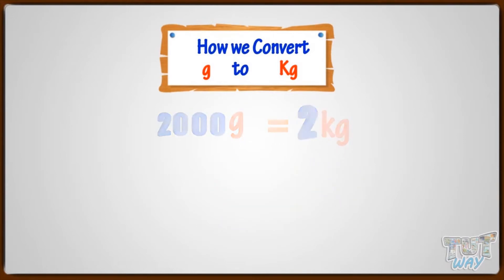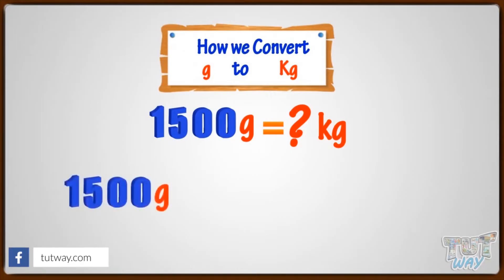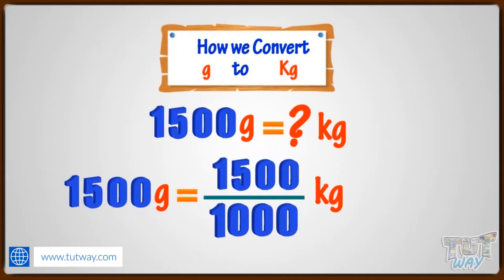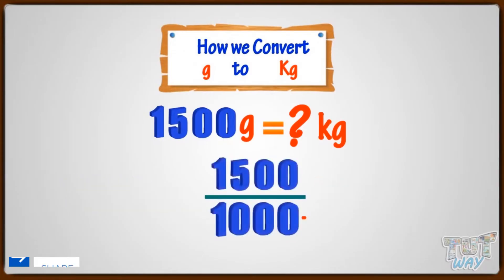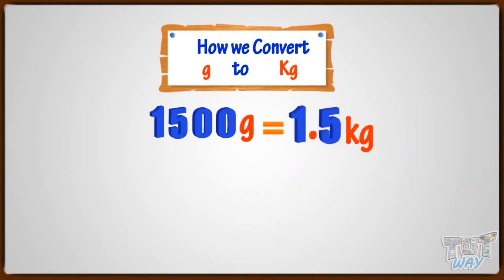1,500 grams is equal to how many kilograms? 1,500 grams equals 1,500 divided by 1,000 kilograms. Cutting three zeros and putting decimal after three digits from right, we get 1.500 or 1.5. So, 1,500 grams equals 1.5 kilograms.